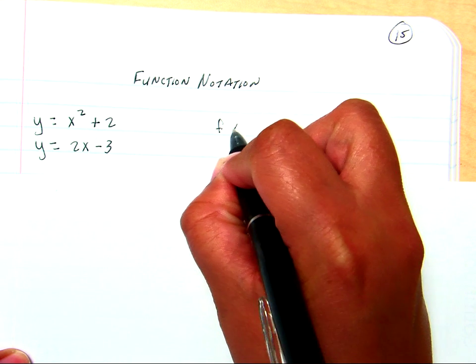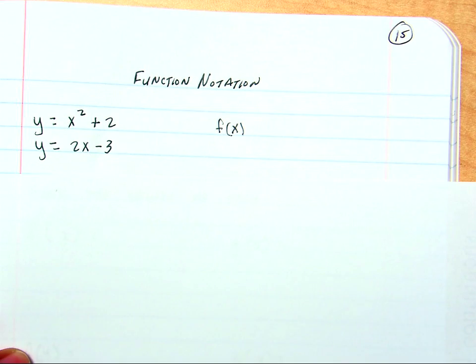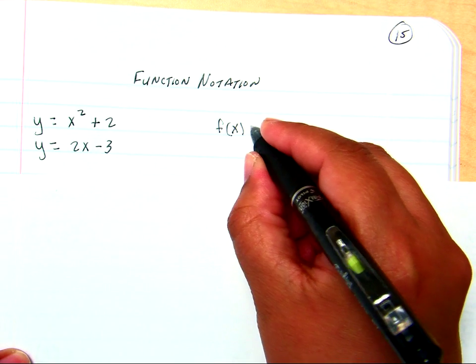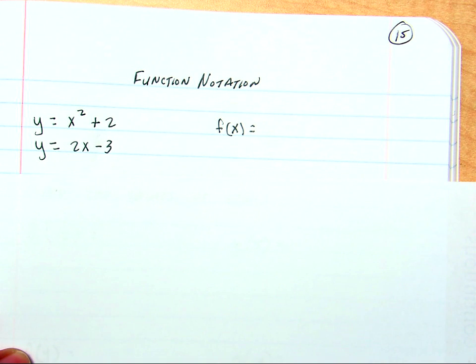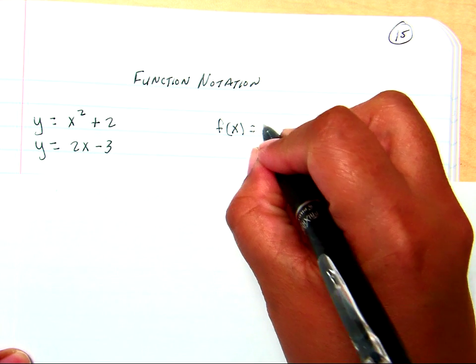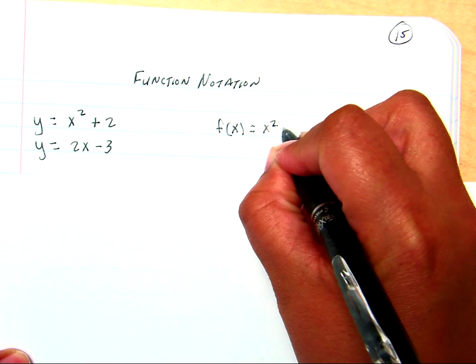And Function Notation is just read f of x is equal to. So this is just a fancy way of saying y equals. And it also lets us determine which equation we're talking about.